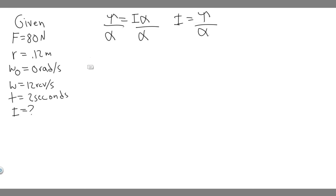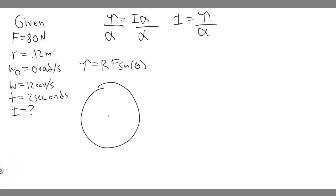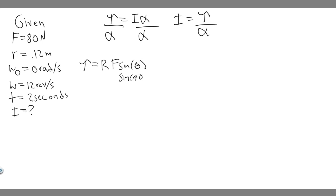Let's start with the torque. Torque equals radius times force times the sine of theta, where theta is the angle between the radius and the force. Imagine a wheel — here's the center, here's the radius, and the force is applied at 90 degrees because it's tangential. So the angle between the radius and the force is 90 degrees, and sine of 90 is just one.